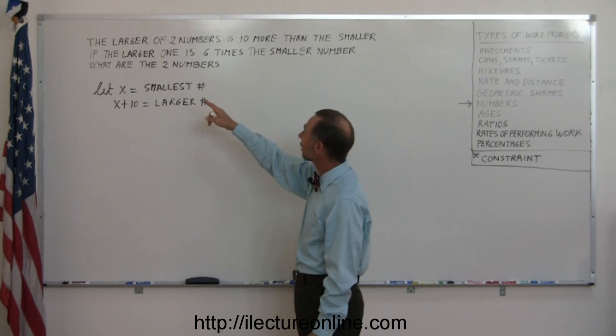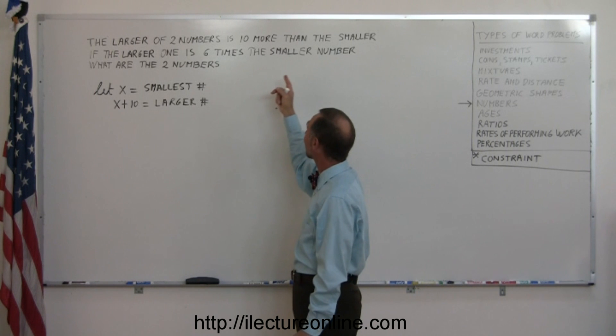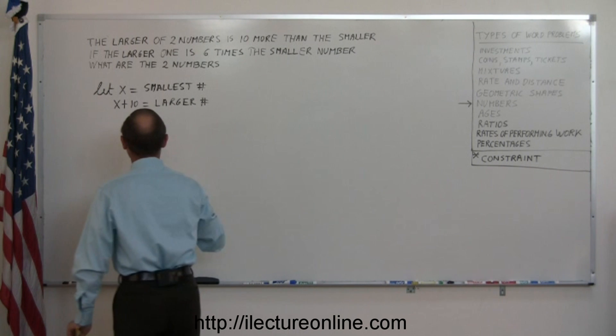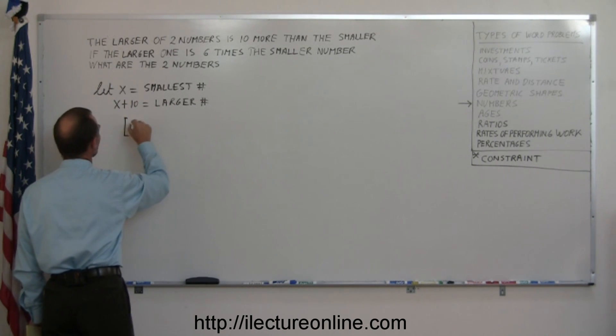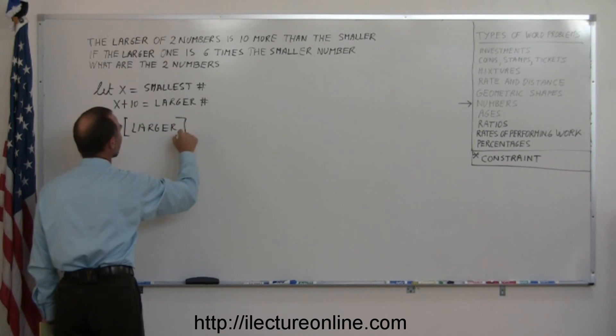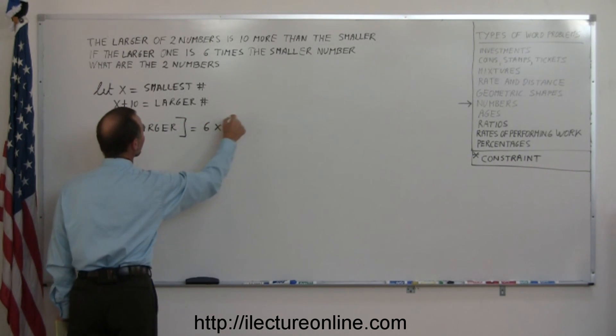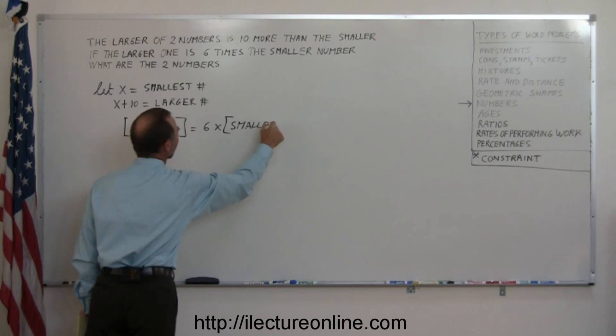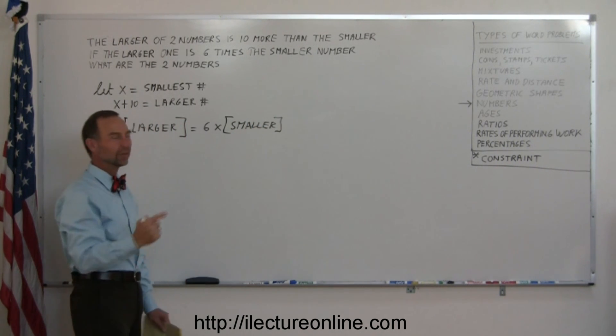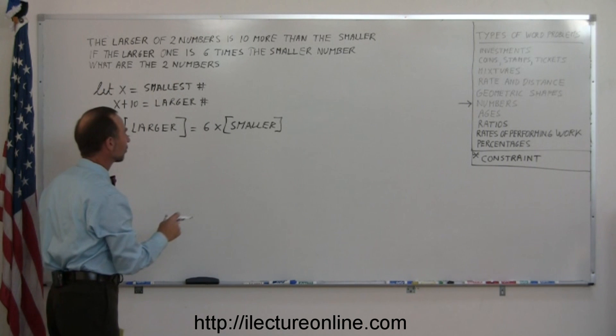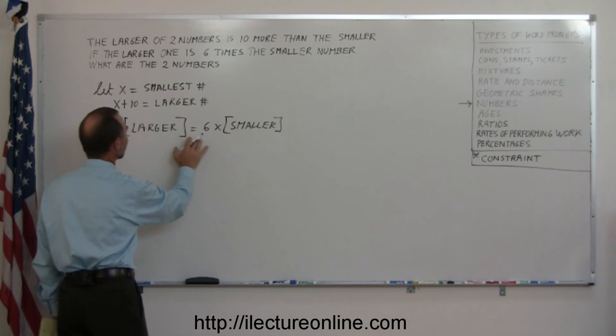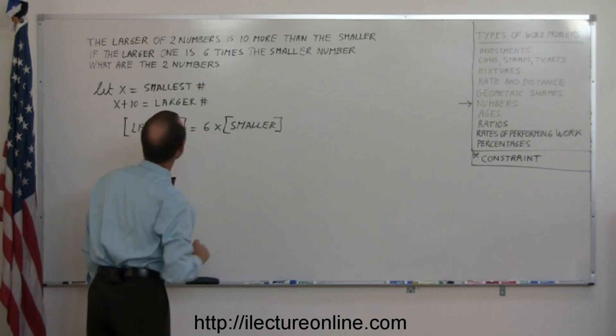They tell us here that the larger one is six times the smaller number. It's not a bad idea to actually write it like this: the larger is equal to six times the smaller number. Kind of paraphrasing what the sentence actually says in English, just putting it more into a mathematical equation. So the larger number is six times the smaller number. We call that the constraint.